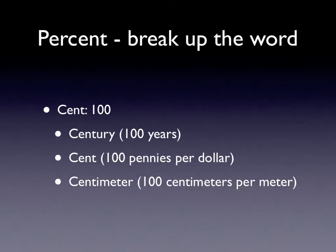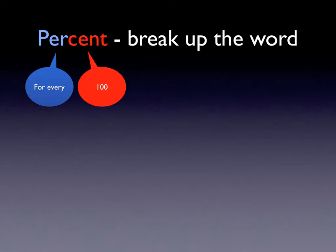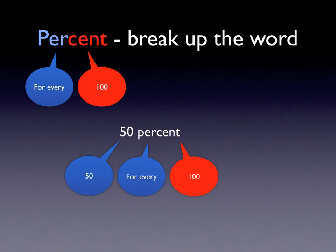The 'cent' word, as we know from science, refers to a hundred. A century is a hundred years, there are a hundred cents in one dollar, and there are a hundred centimeters in one meter. So 'percent' — per means for every, and cent means hundred — so percent means for every hundred. For example, fifty percent means fifty for every hundred of something, or fifty out of every hundred. We can think of this as a fraction: fifty out of every hundred, or fifty percent.